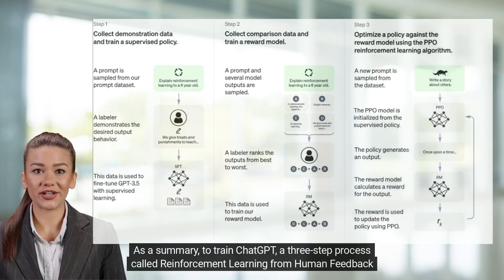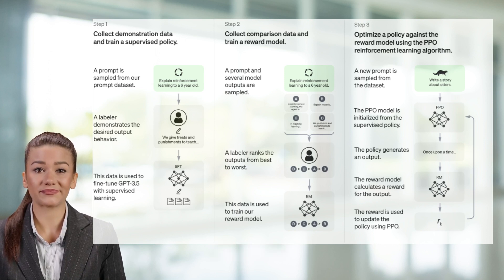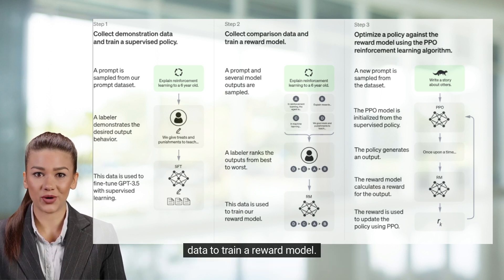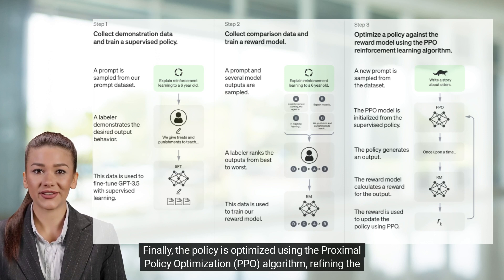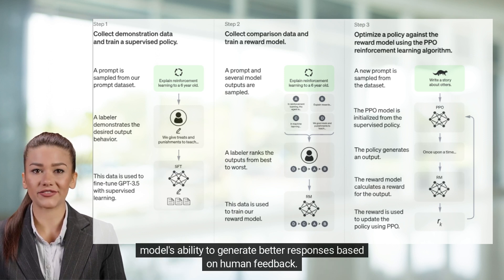As a summary, to train ChatGPT, a three-step process called Reinforcement Learning from Human Feedback, or RLHF, is used. It starts by collecting demonstration data to create a supervised policy, then proceeds to collect comparison data to train a reward model. Finally, the policy is optimized using the Proximal Policy Optimization, PPO algorithm, refining the model's ability to generate better responses based on human feedback.